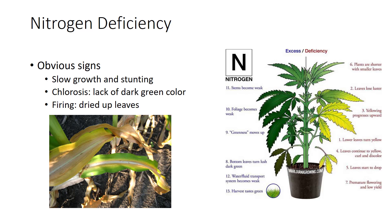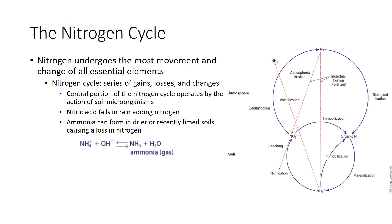In broadleaf plants, leaves are small with overall yellowing. Of the essential elements, nitrogen undergoes the most movement and change. The series of gains, losses, and changes is termed the nitrogen cycle. The central portion of the nitrogen cycle operates by the action of soil microorganisms. The complete nitrogen cycle includes some non-biological processes as well, as shown in the figure as broken lines.